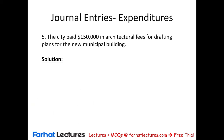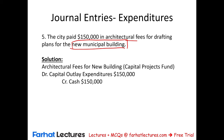Transaction 5: The city paid $150,000 in architect fees for drafting plans for the new municipal building. This is an expenditure charged against the capital projects fund, since it's for the new municipal building. We debit capital outlay expenditure $150,000 and credit cash $150,000 — recorded in the capital projects fund. This is also why the transfer of $200,000 was needed — to fund the architect payment.